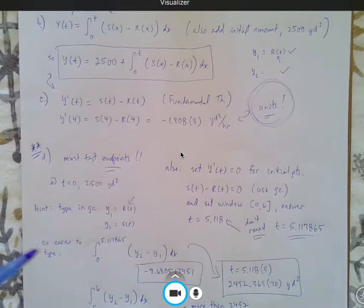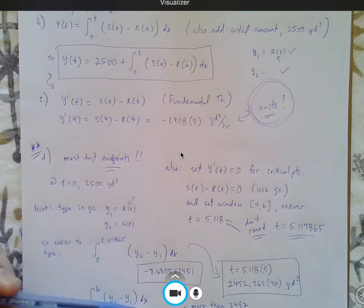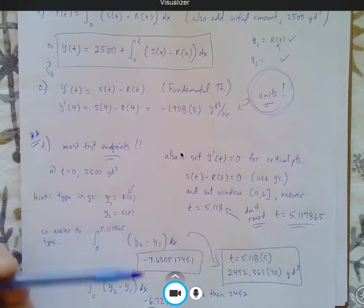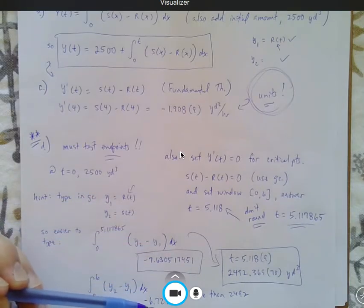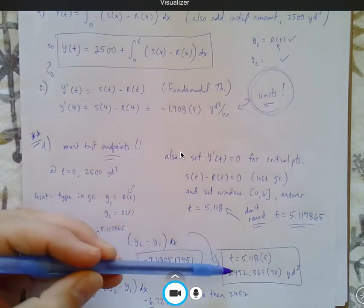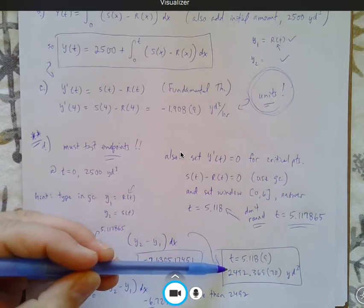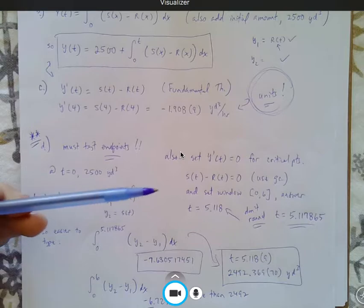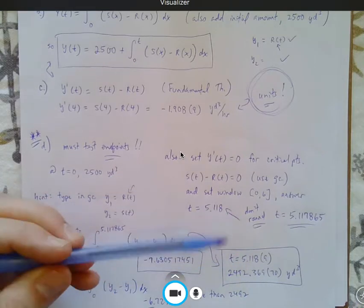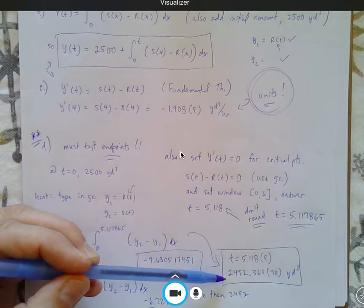And then I also have to test the integral from 0 to 6 because I have to test the endpoints. And that gave me a negative 6, which will not give me less than 2,492. So, again, test that out. You'll find that to be a pretty hard problem. But the answer is at time 5.118, that's how many cubic yards of sand you would have had.